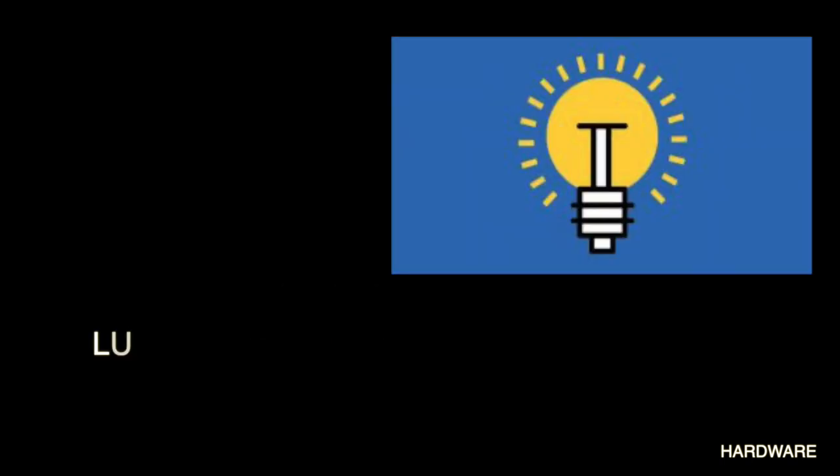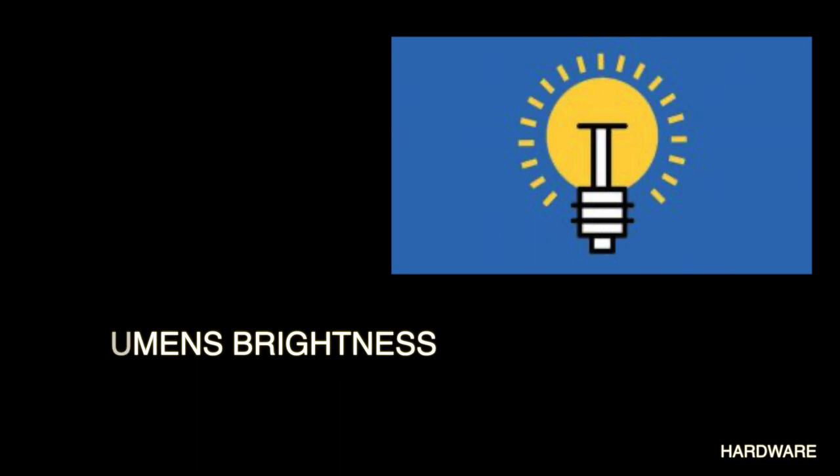Lumen brightness: a lumen is a measure of the amount of brightness of a light bulb. The higher the number of lumens, the brighter the light bulb.